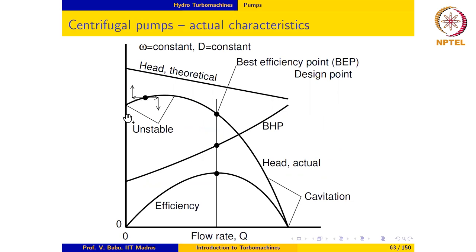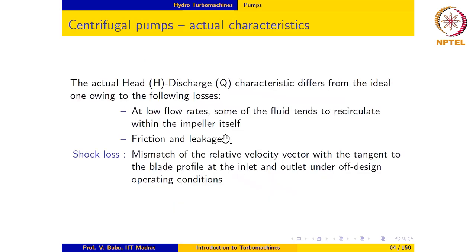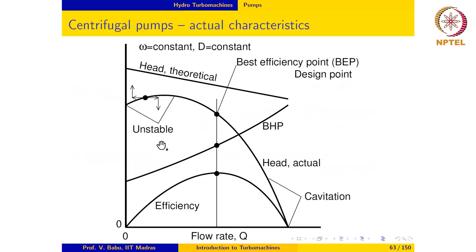Friction and leakage are also important factors. The friction between the fluid and the impeller surfaces — the no-slip surface — can be quite high in the case of the centrifugal impeller, because for the velocities we are considering the flow is likely to be very turbulent. So fluid friction is quite high, and that has been neglected while deriving the theoretical characteristic.